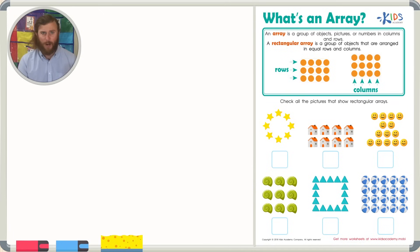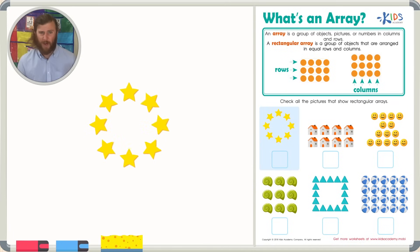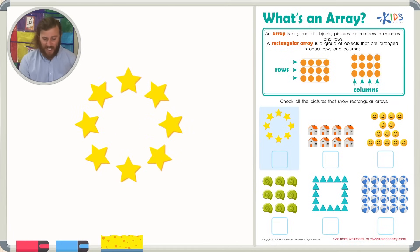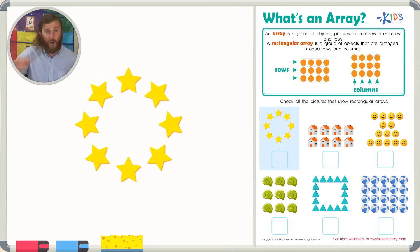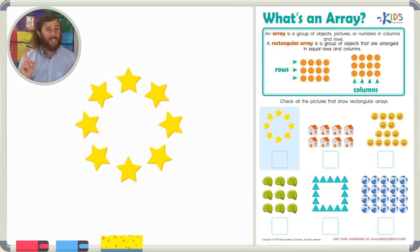Let's look at our first picture. In our first picture, I see a circular group of stars. I know that an array has to have columns and rows, and I don't see any columns and rows in this picture. So, this is not an array.